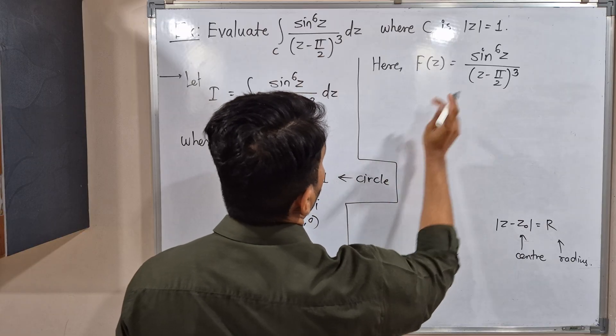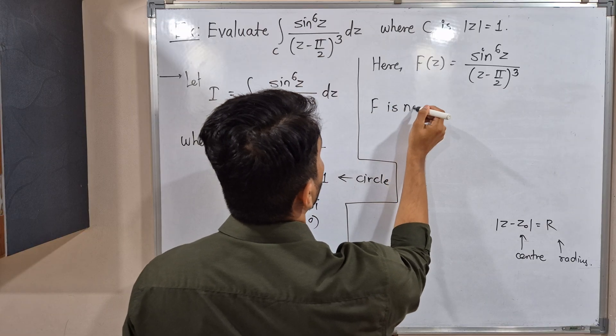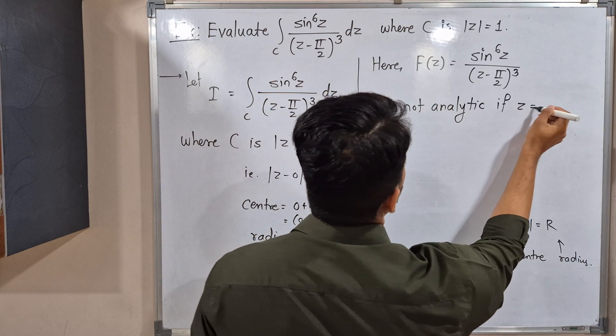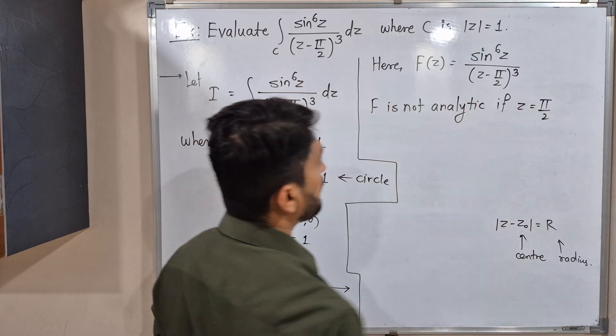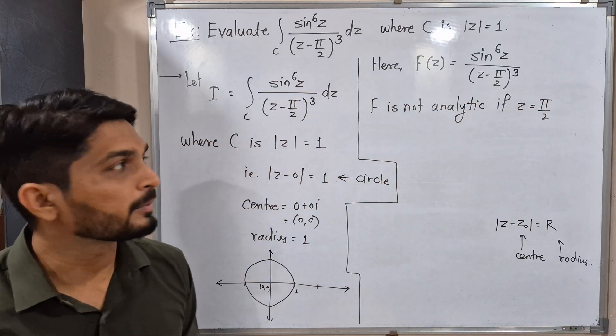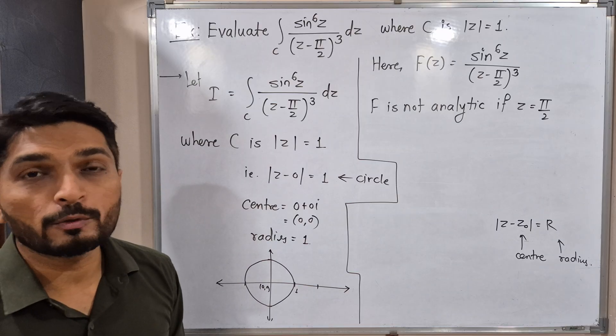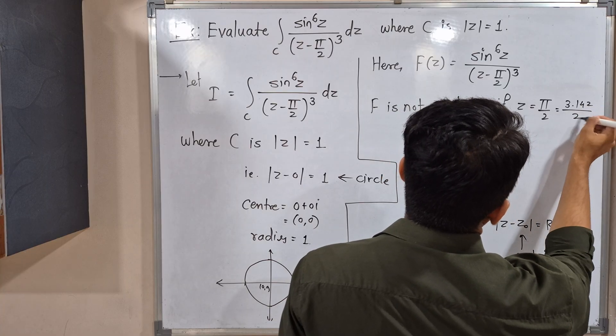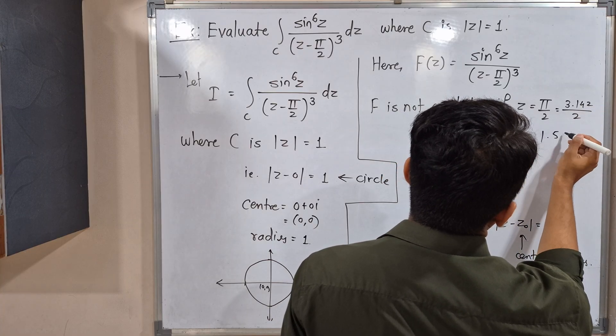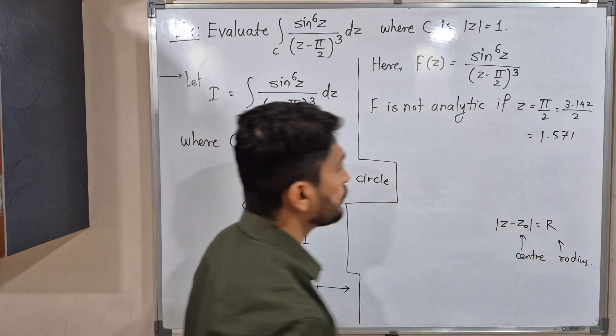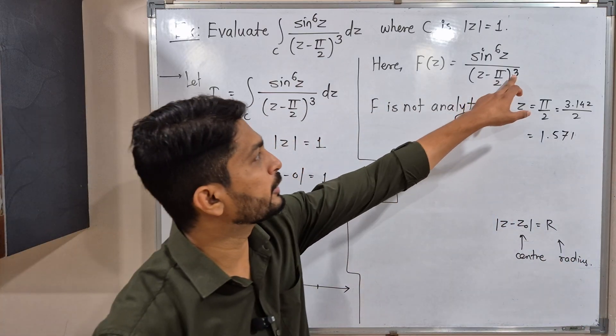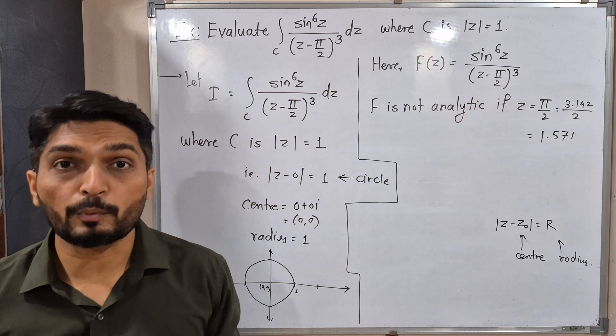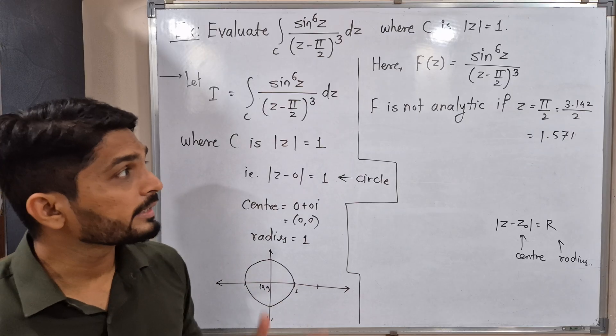For which value of z will the denominator become zero? F is not analytic if z is equal to π by 2. If z equals π by 2, then π by 2 minus π by 2 becomes zero, so the function is not analytic at z equals π by 2. What is the value of π? It is 3.142 divided by 2, so if you divide using calculator, it's 1.571 something like that.